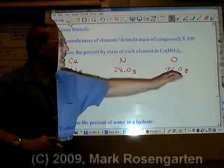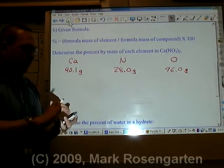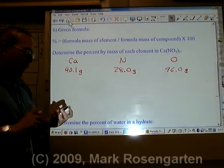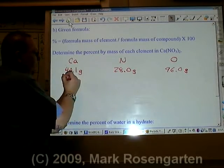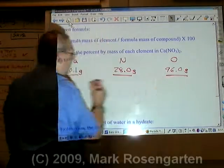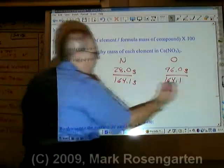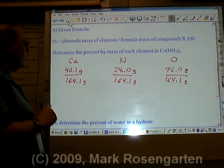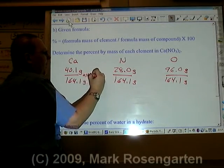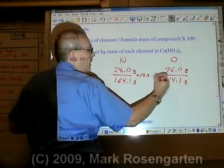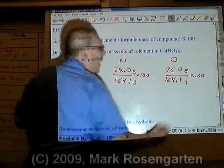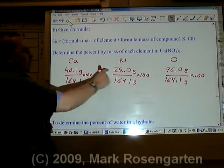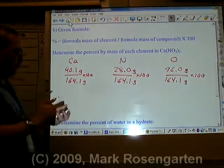Let's add them up and get the total combined mass. That comes out to 164.1, and that's the mass of the entire compound, one mole's worth. Then we simply divide and multiply by 100 to get a percent. Let's get the percent of each element now. Each one will have three sig figs.